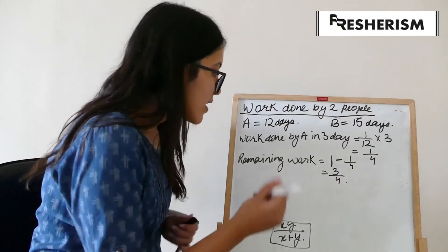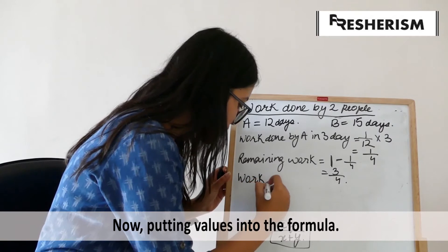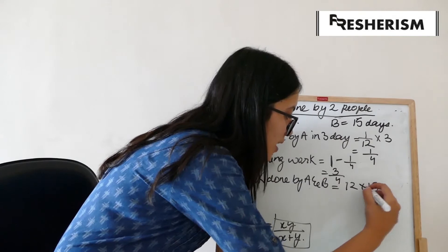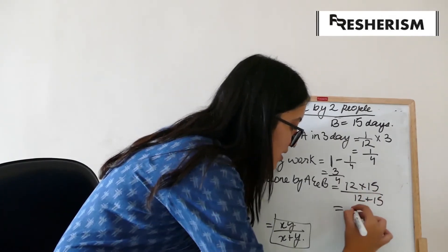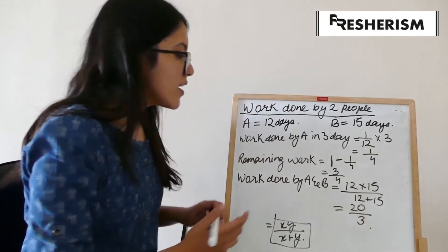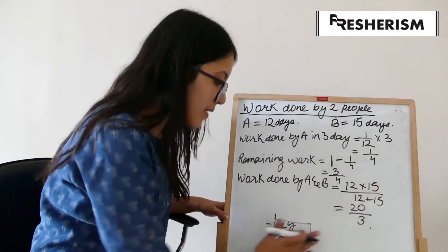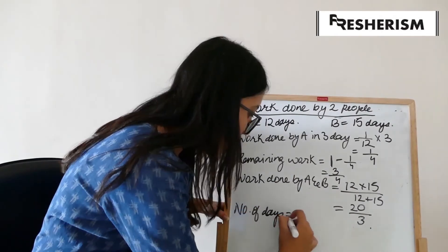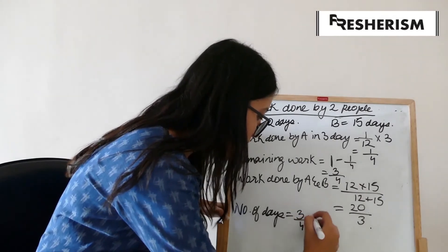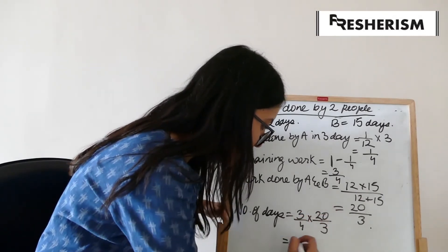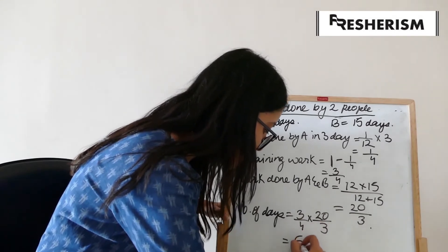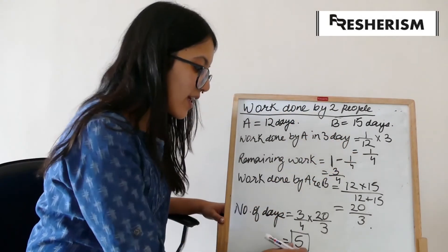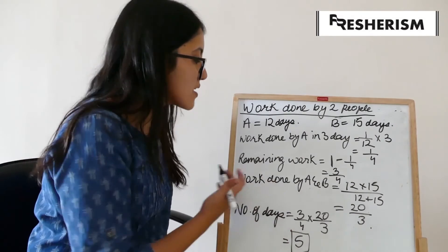Now, let us calculate the work done by A and B together. Using the formula, it will be 12 into 15 upon 12 plus 15, which gives us 20 by 3. Now, we know that the remaining work was only 3 by 4. Therefore, we get the number of days as 3 by 4 into 20 by 3, which gives us the answer 5. Therefore, A and B will together be able to complete the work in 5 days, given that B joins A after 3 days.